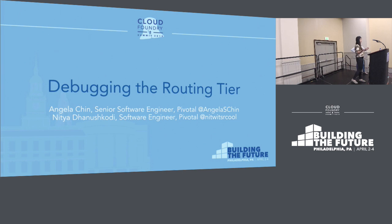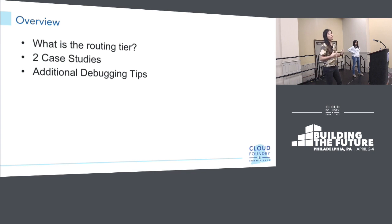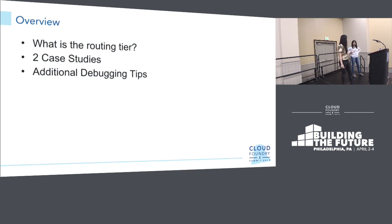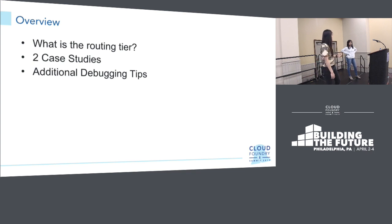We're talking about debugging the routing tier, but let's first start with a brief overview of what we're planning to discuss for the next 30 minutes. We're going to start with a brief overview of what the routing tier is and what components make it up, before taking a deep dive into two case studies that we as members of the networking program actually worked on. These are actual case studies from actual users where we really took a deep dive to figure out what was going wrong when the problem manifests in the routing tier. Then we'll finish with additional debugging tips.